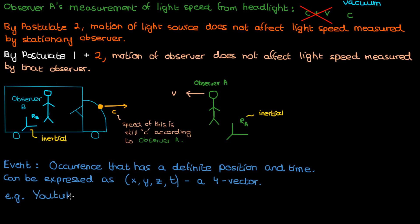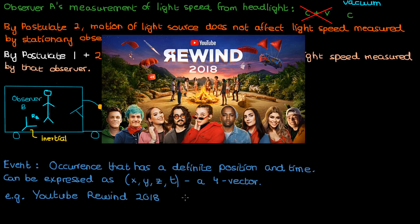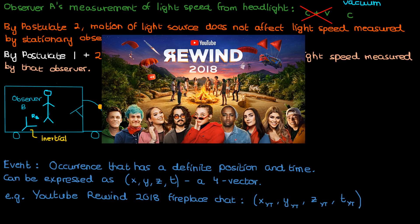An example of an event is the legendary fireplace chat from the YouTube Rewind video of 2018. We can describe the event as occurring somewhere in California, denoted by x_YT, y_YT, z_YT, and some time in December, denoted by t_YT. The main reason for choosing this event is that it would evoke strong emotions in the audience — feel free to describe those emotions in the comments.